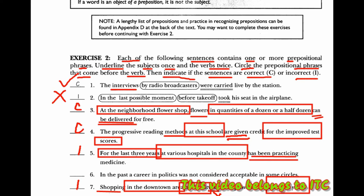Untuk nomor 6, 'in the past' itu adalah objek preposisi, 'in politics' itu adalah frasa preposisi. 'A career' ini adalah subjeknya, 'was not considered' ini adalah predikat, jadi 'was not considered' ini adalah main verb yaitu kata kerja utamanya. Maka kalimat ini kita boleh bilang benar, correct.